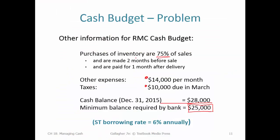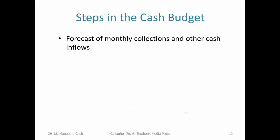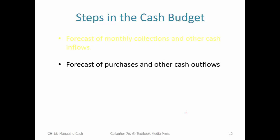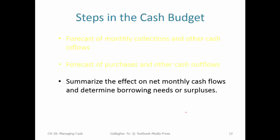The bank requires us to keep a minimum balance — they might penalize us if we go much below that — but we don't want to go much above it because it just doesn't pay to keep too much extra money in the bank. So we forecast collections and other cash inflows, forecast our outflows, and then summarize the net monthly effect to determine if we need to borrow or if we have a surplus to invest. With a lot of businesses, you'll have both situations occurring at alternate times during the year.